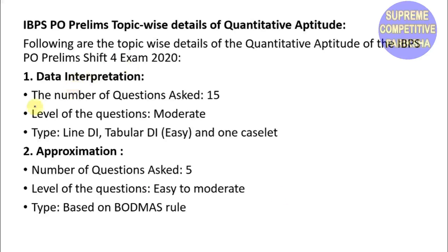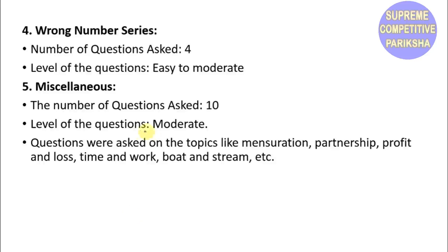In Quantitative Aptitude, Data Interpretation had 15 questions with moderate level. The types included Line DI, Tabular DI, and one Caselet. Each was worth 5 marks - 5 marks for Line DI, 5 marks for Tabular, and 5 marks for Caselet DI. Approximation had 6 questions with easy to moderate level, based on BODMAS rule for approximation and simplification.